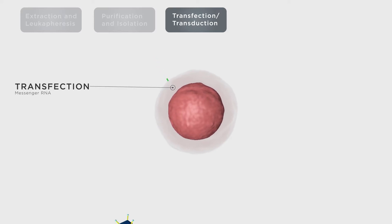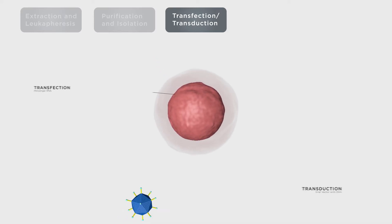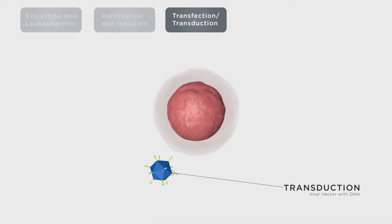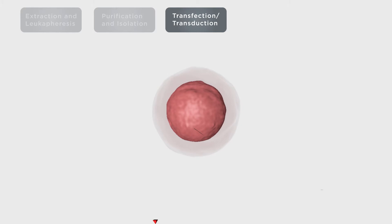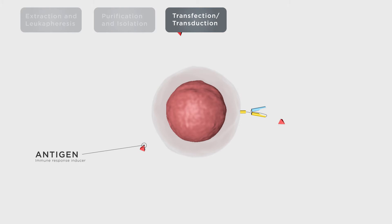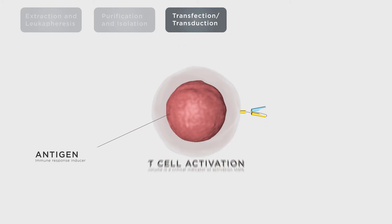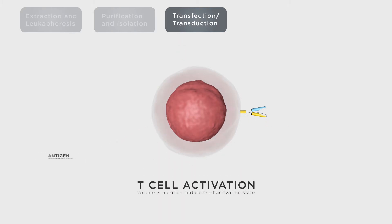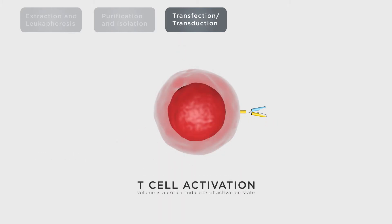This genetic material can be introduced into the cell via mRNA transfection, or more commonly, viral vector transduction. The transduced T cell population is activated using antigens. Cell volume is a critical indicator of the activation state of the T cell.